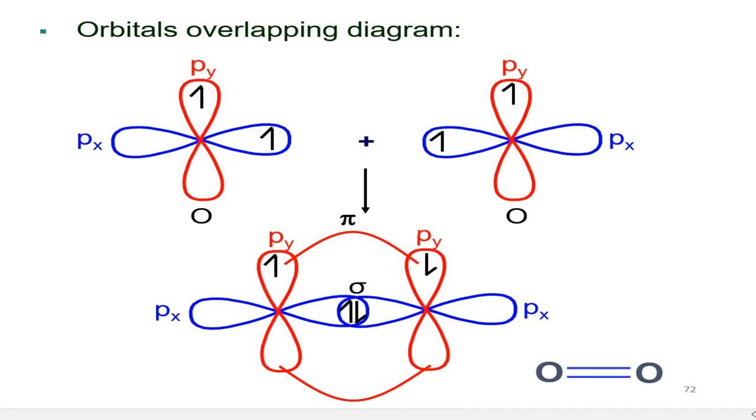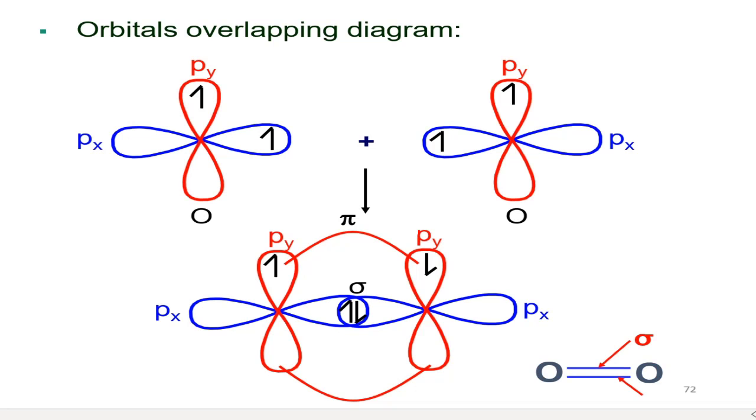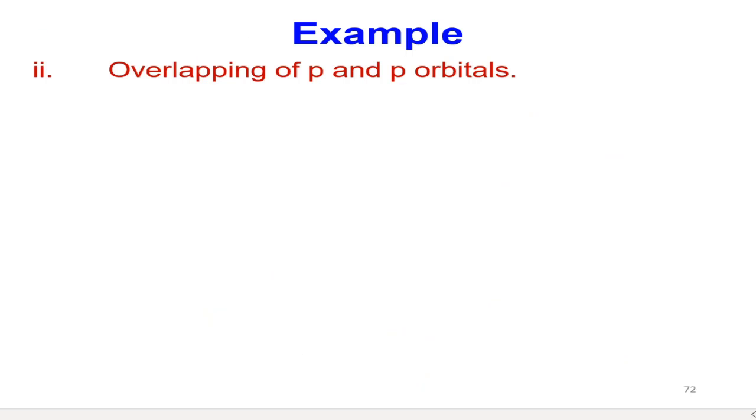As a conclusion, oxygen gas will have a double bond. The first bonding form is a sigma bond and the second bond is a pi bond.